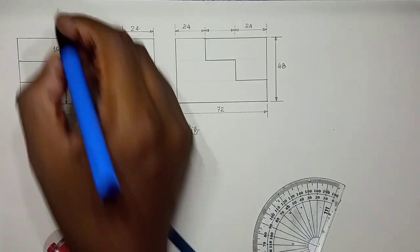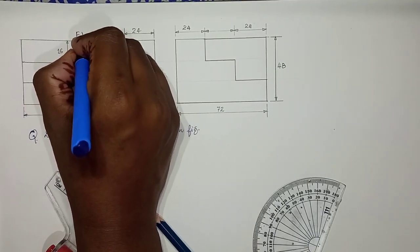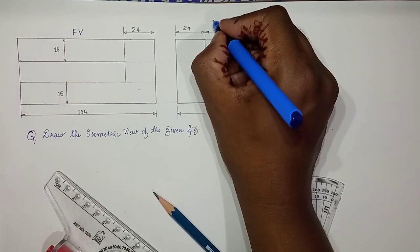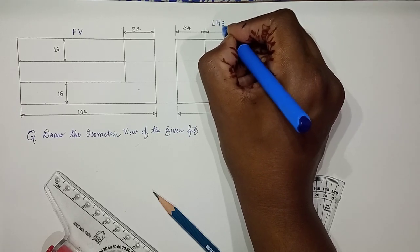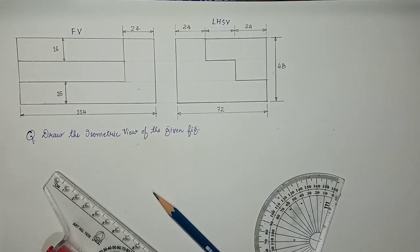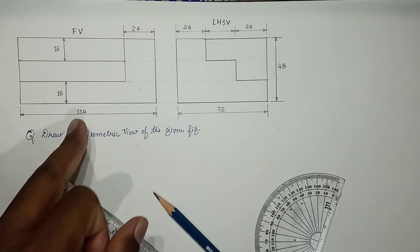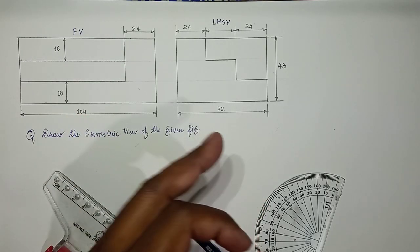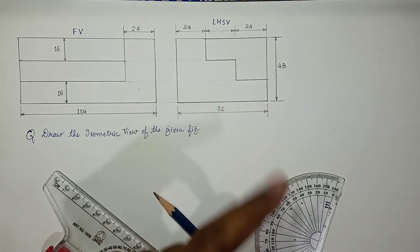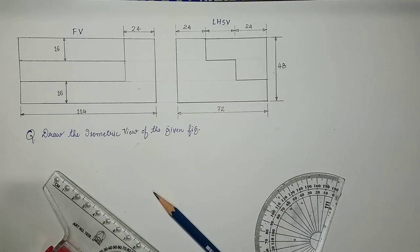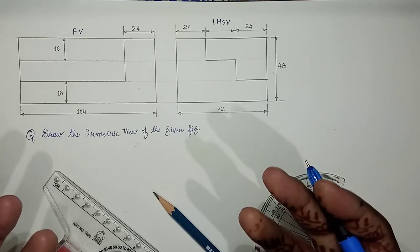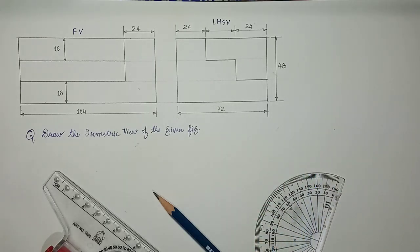So we can say this as front view and this as left hand side view LHSV. If you look at the figure from the front it will appear like this, and if you look at the figure from the left hand it will show this representation. So this is the question, we need to make a 3D figure. It's a bit challenging.